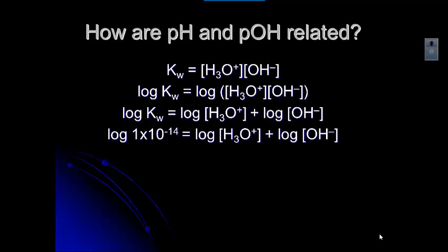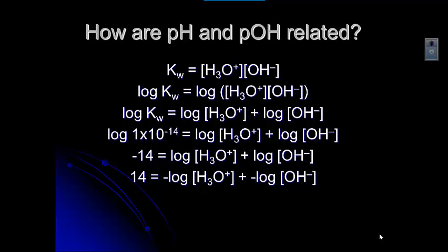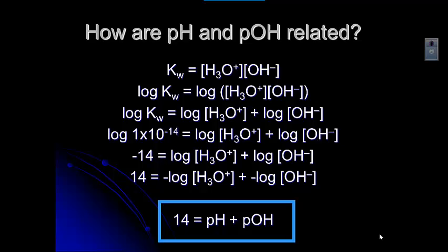We can substitute in 1 times 10 to the negative 14th for Kw, because we know that that's the value. If we take the log of 1 times 10 to the negative 14th, that becomes negative 14. And then if we divide through by negative 1, you can see that 14 equals the negative log of the hydronium ion concentration plus the negative log of the hydroxide ion concentration. Substituting in, 14 is equal to pH plus pOH. This will probably be your most useful formula for this part of the unit.